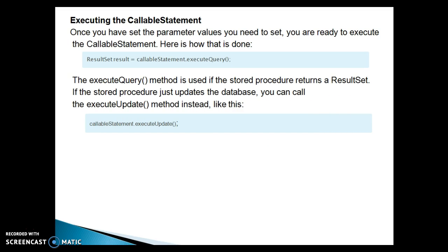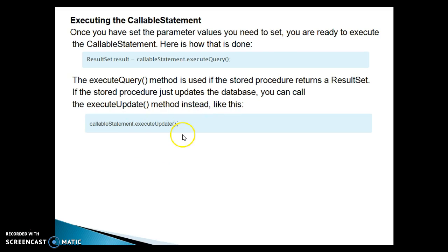Once you have set the parameter values you are ready to execute the callable statement. You call callableStatement.executeQuery(), which returns a result set if the stored procedure returns one. If the stored procedure just updates the database, you call the execute() method instead. This is very similar to the prepared statement execution model.